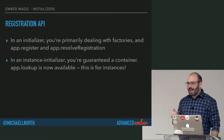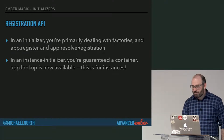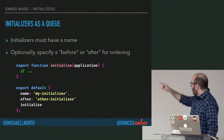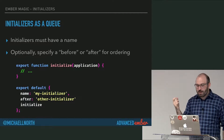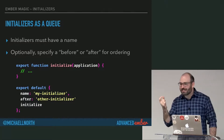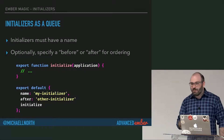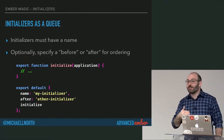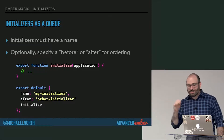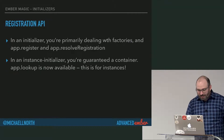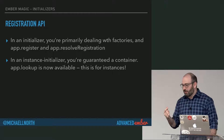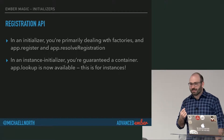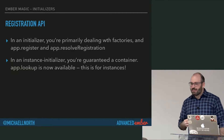There's a method called app.lookup. The 'app' argument passed into the initializer function is the instance of the application. In initializers, it's going to be your half-constructed application instance. And when we're doing instance initializers, it is your fully constructed application instance. So you have app.lookup available in an instance initializer, which is what will get you a singleton object — it lets you get access to a service without having to inject it.